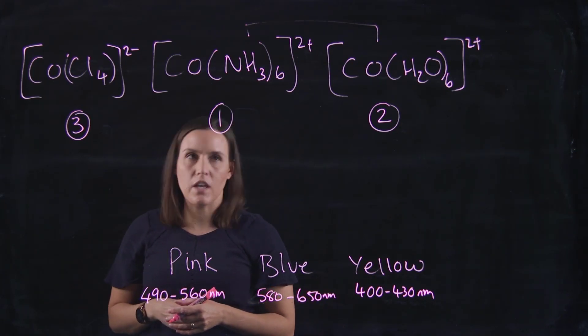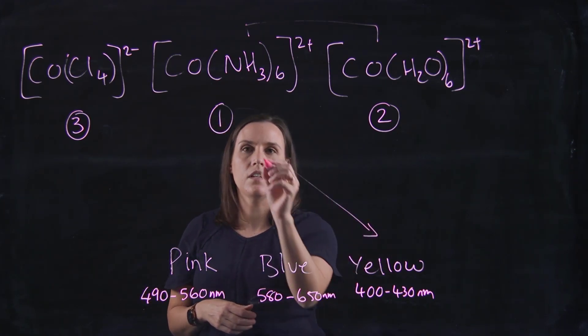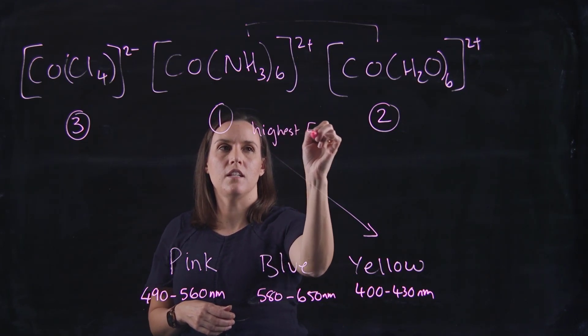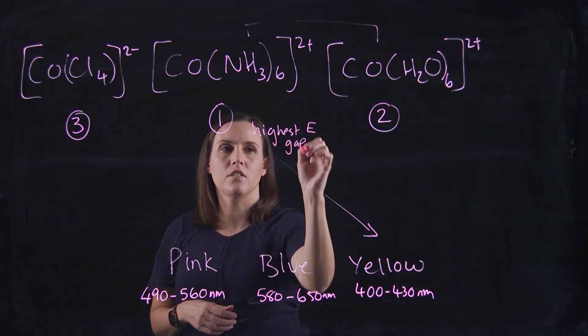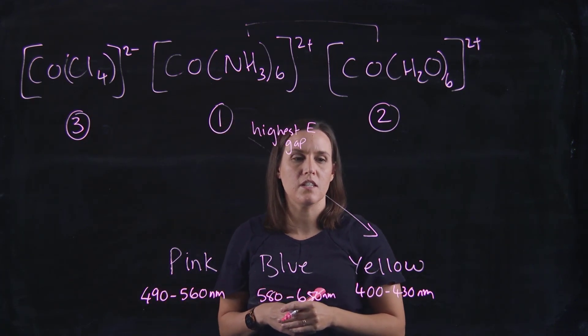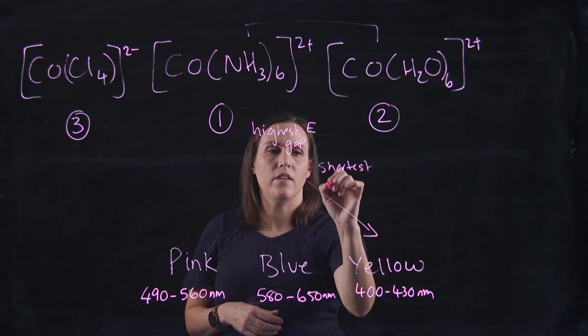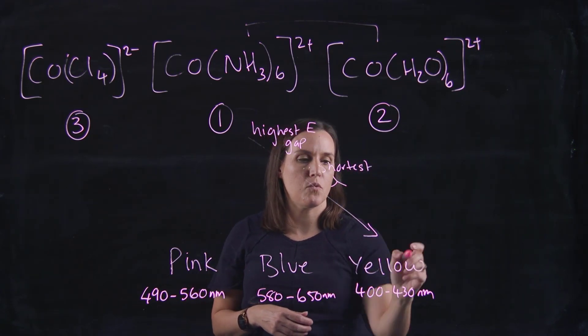Therefore it would be yellow. This has the highest energy gap determined from the spectrochemical series, so it has the shortest wavelength. That would be yellow.